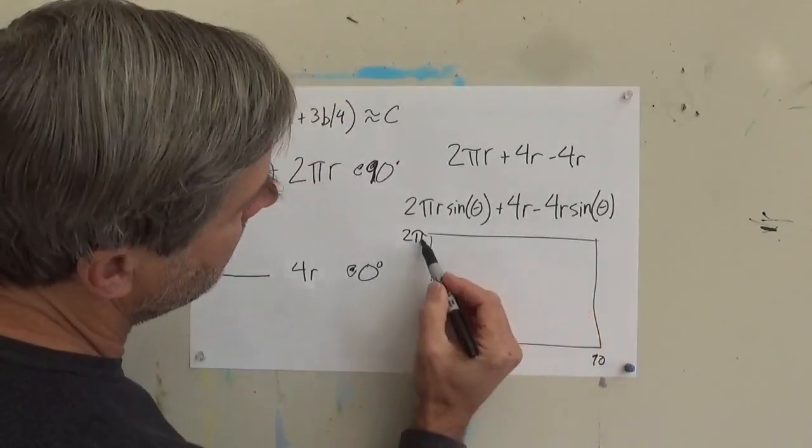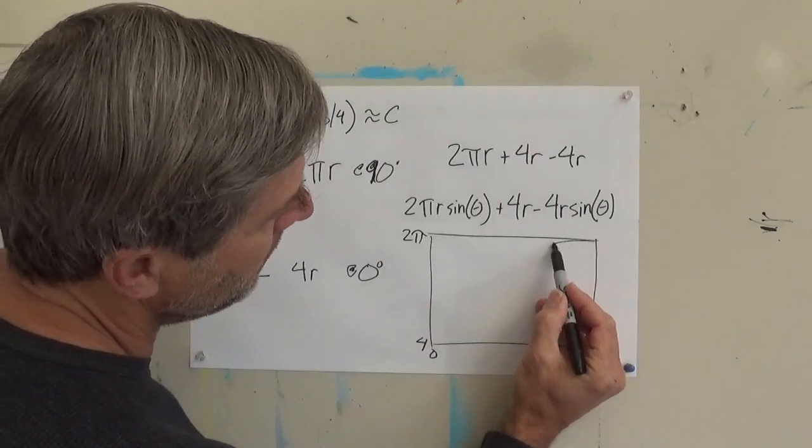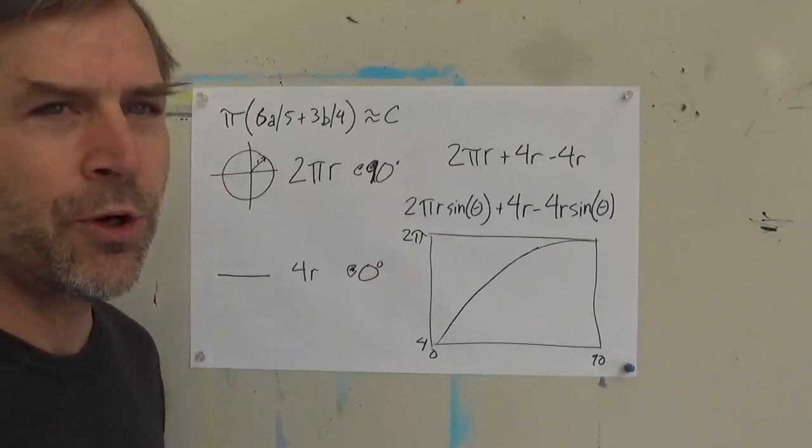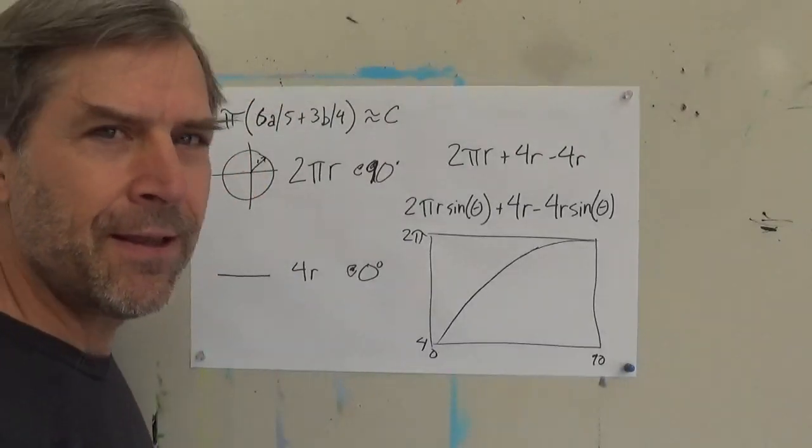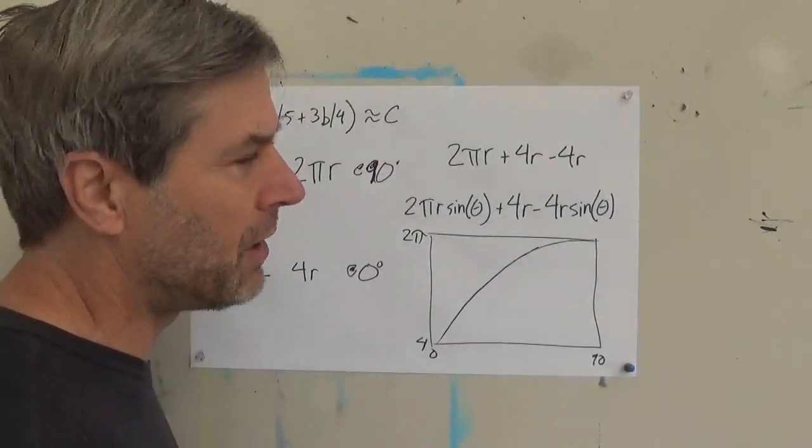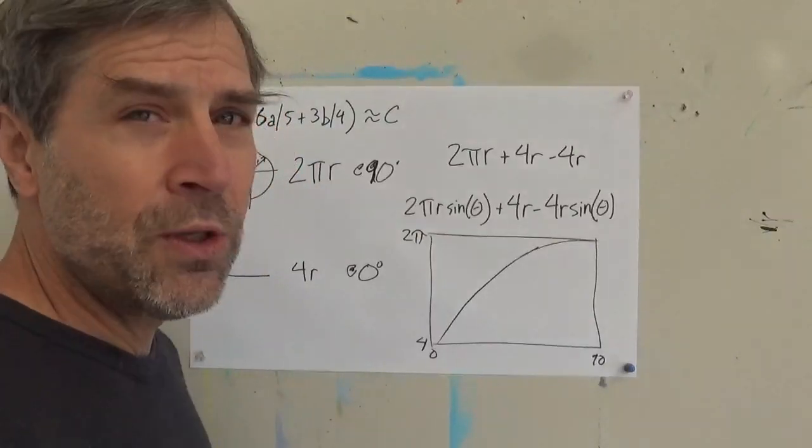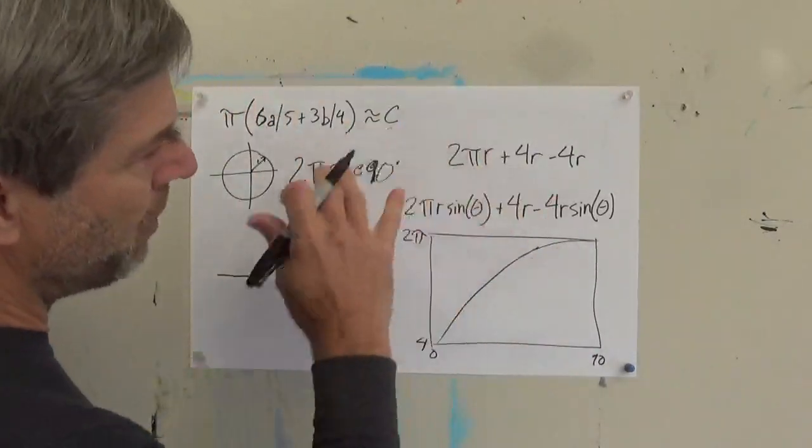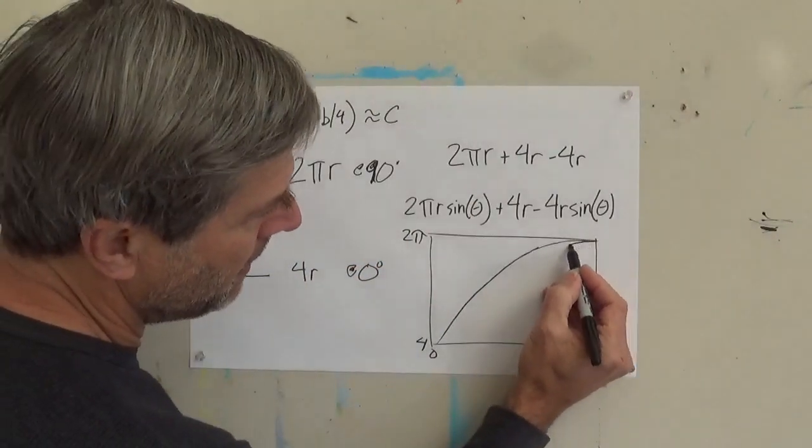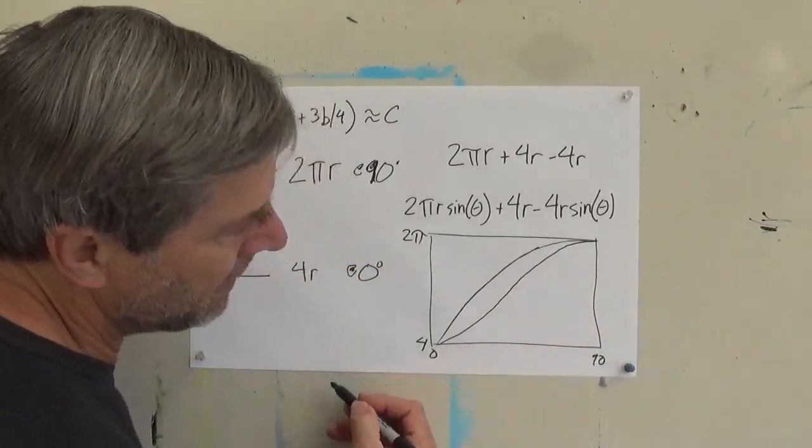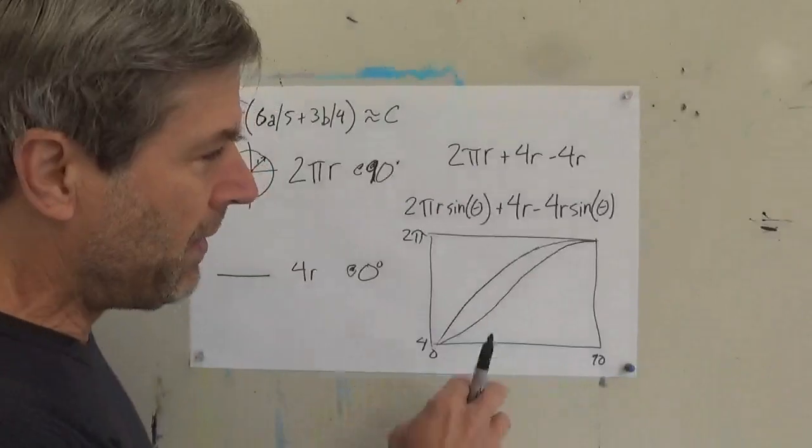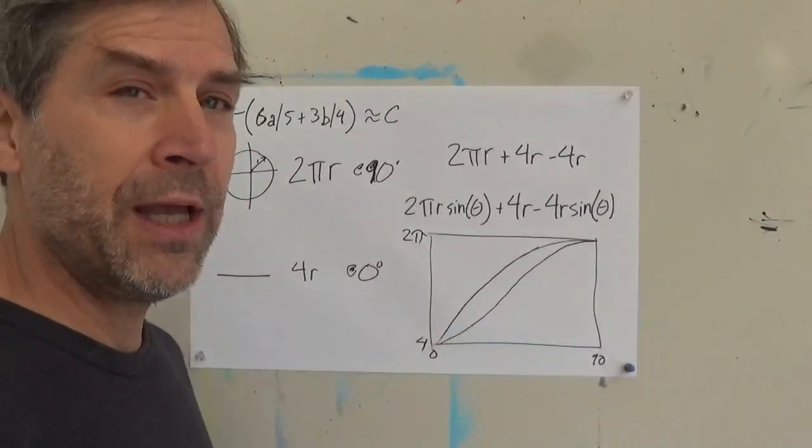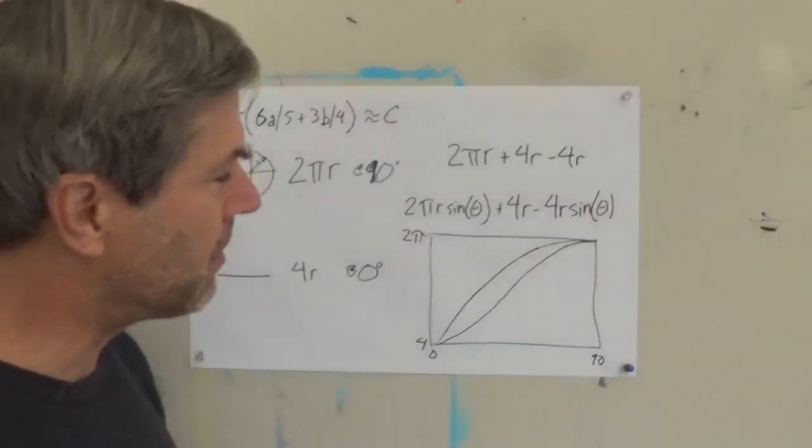that reaches really close to the actual curve that the perimeter of an ellipse would have. So if you do the calculus version of the perimeter of an ellipse, its curve looks like that. And that's the actual real perimeter of the ellipse if you use calculus to determine it.